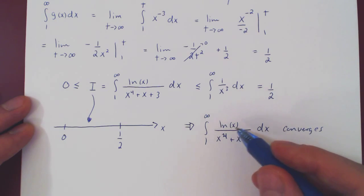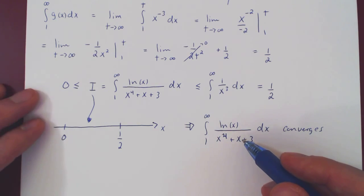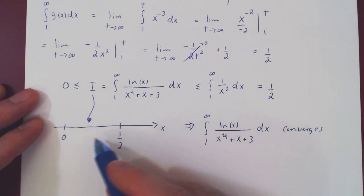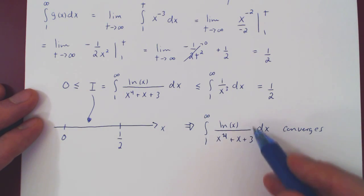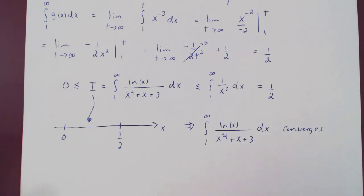The question of what it converges to, is a much more difficult question. We know it's between 0 and 1 half. What's the exact value? We're not even going to go there. And so that's it.